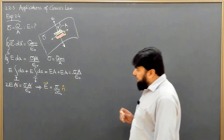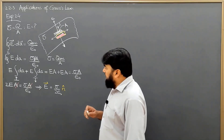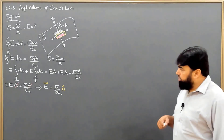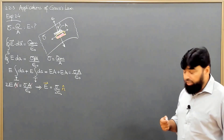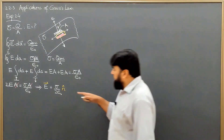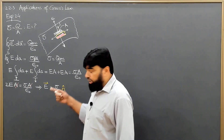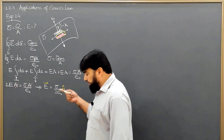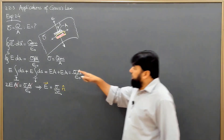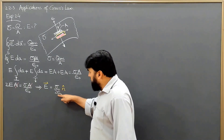Here we know that the electric field of a sphere, electric field of a line charge, electric field of a cylinder — they are all dependent on the distance from the source. But if I look here, the electric field is completely constant.